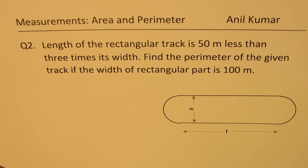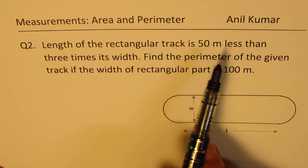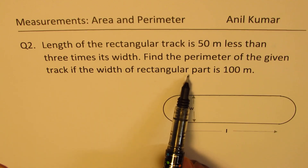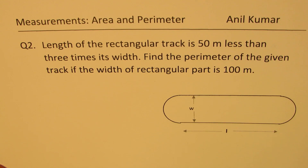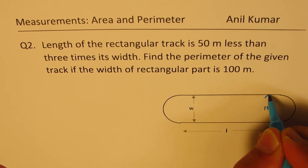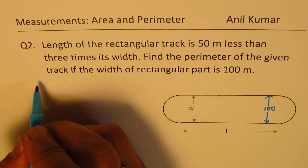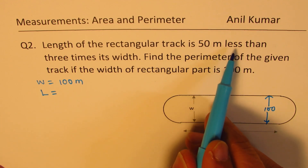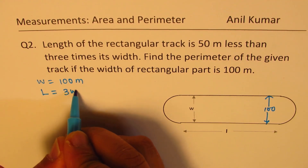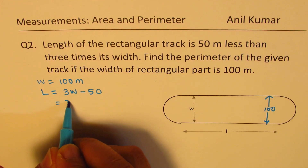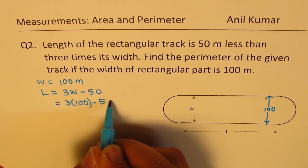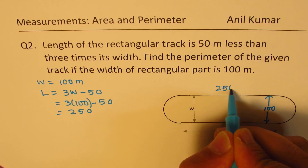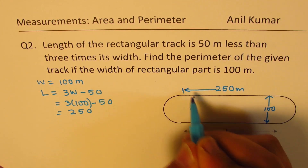Question number two: the length of the rectangular track is 50 meters less than three times its width. Find the perimeter of the given track if the width of the rectangular part is 100 meters. So width equals 100 meters. The length is 3 times the width minus 50, which is 3 times 100 minus 50 — that is 300 minus 50, giving us 250 meters as the length.